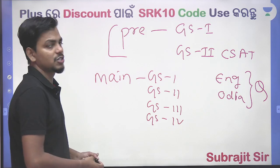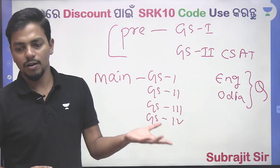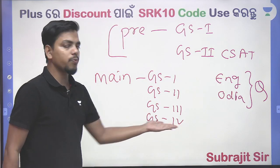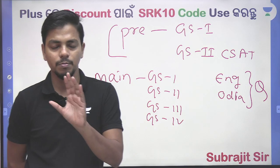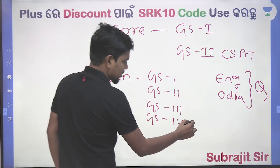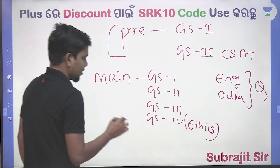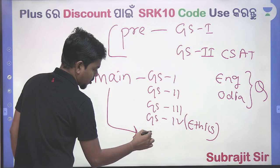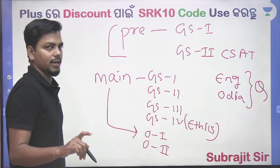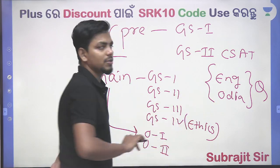GS Paper 1 covers history, geography, international relations, and economics. You have to add ethics in the paper from 2022. You also have to add the data paper. This is a rank of 100 marks — should you qualify?